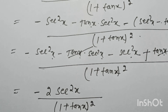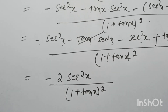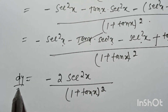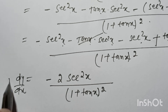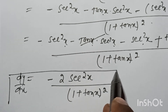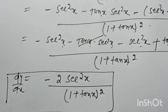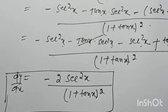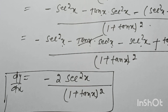So dy/dx equals minus 2·sec²x divided by (1 plus tan x) squared. That is the final answer. Thank you for watching my channel — please like, subscribe, share, and comment.